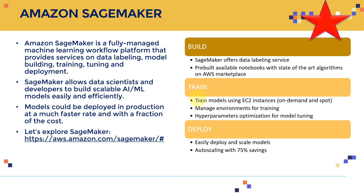For training, you can train models using EC2 instances and leverage on-demand and spot instances to save on cost. You can manage training environments and perform hyperparameter optimization tuning. SageMaker offers automatic hyperparameter tuning — you specify the parameters and it runs multiple jobs to find the best values. For deployment, you can easily deploy and scale models with auto-scaling, saving up to 75%.